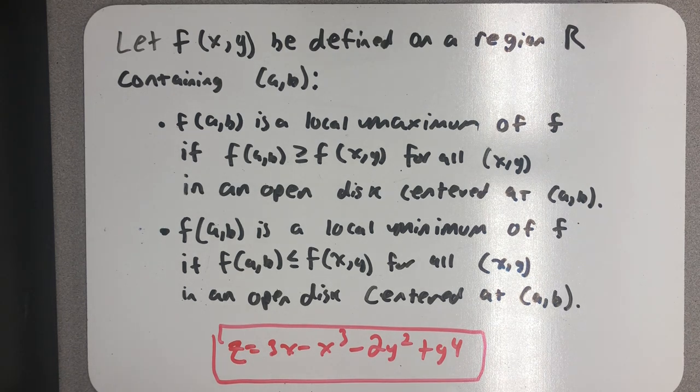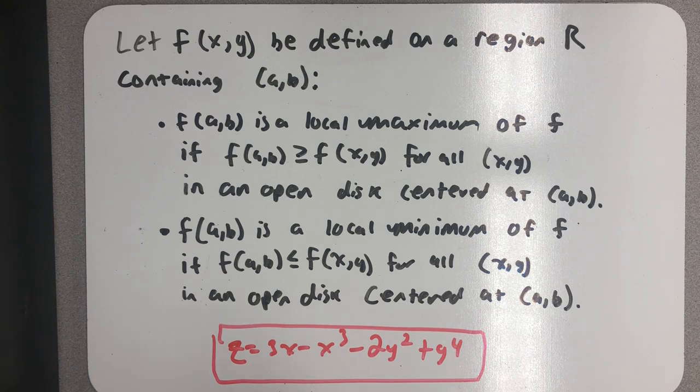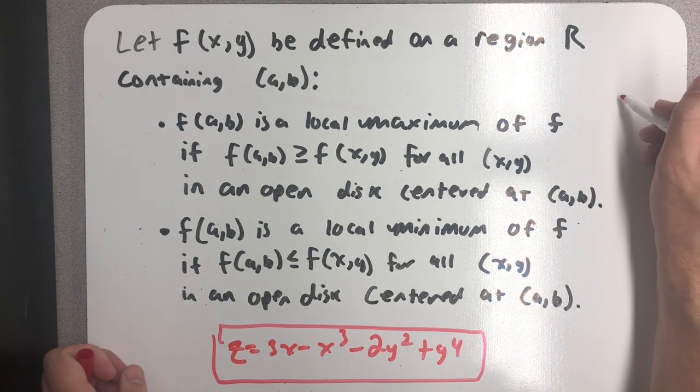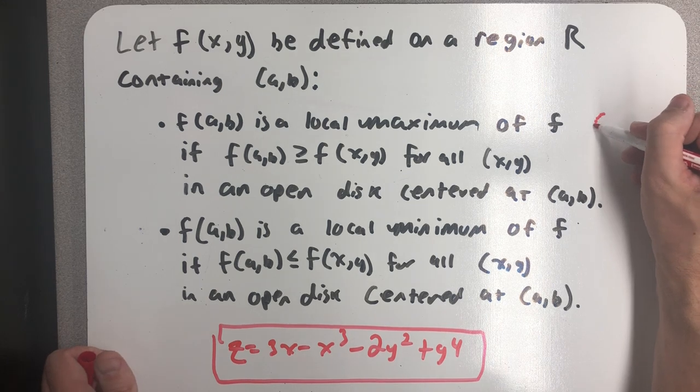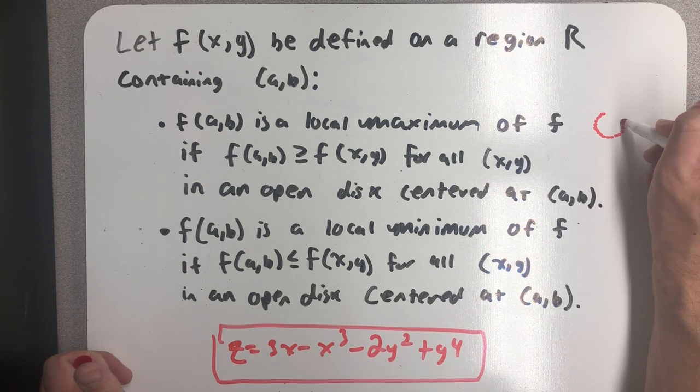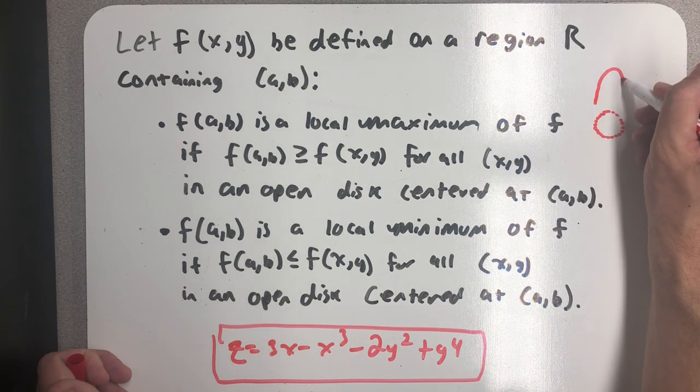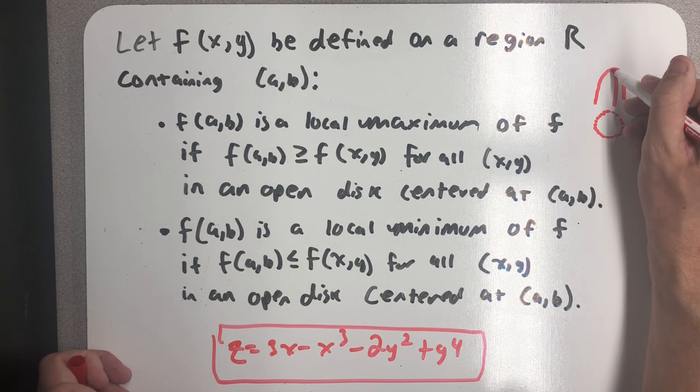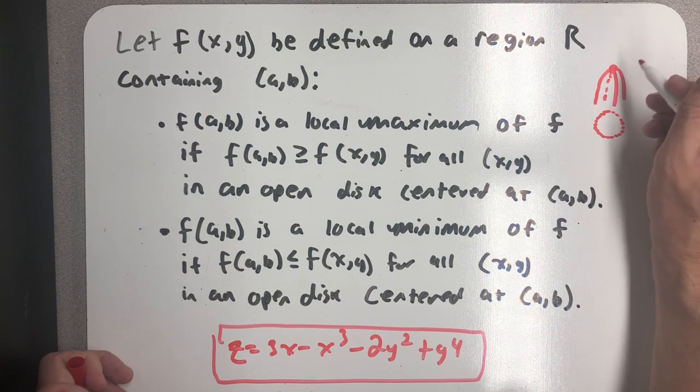To start off, let f of x, y be defined on a region R containing the point (a, b). The z-value, f(a, b), is a local maximum of f if f(a, b) is greater than or equal to f(x, y) for all x, y in an open disk centered at (a, b). So the idea is that you look at a small region in the domain, just some open disk around a point, and if you just look at the z-values over that disk, the point you're looking at will look like it's at the top of a hill.